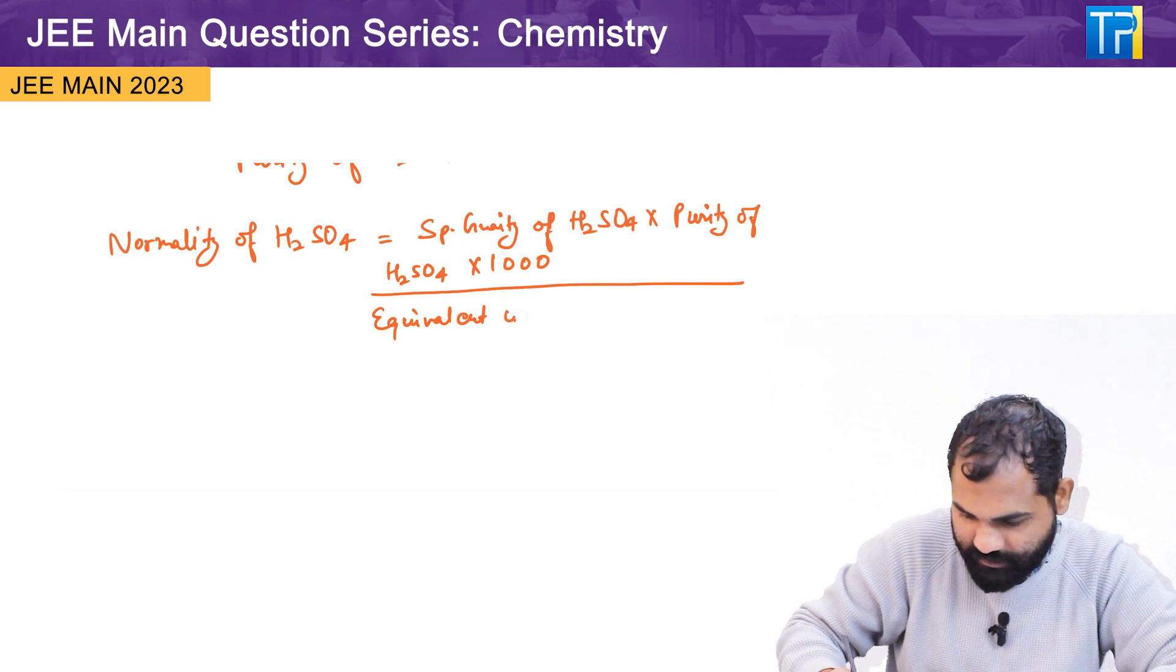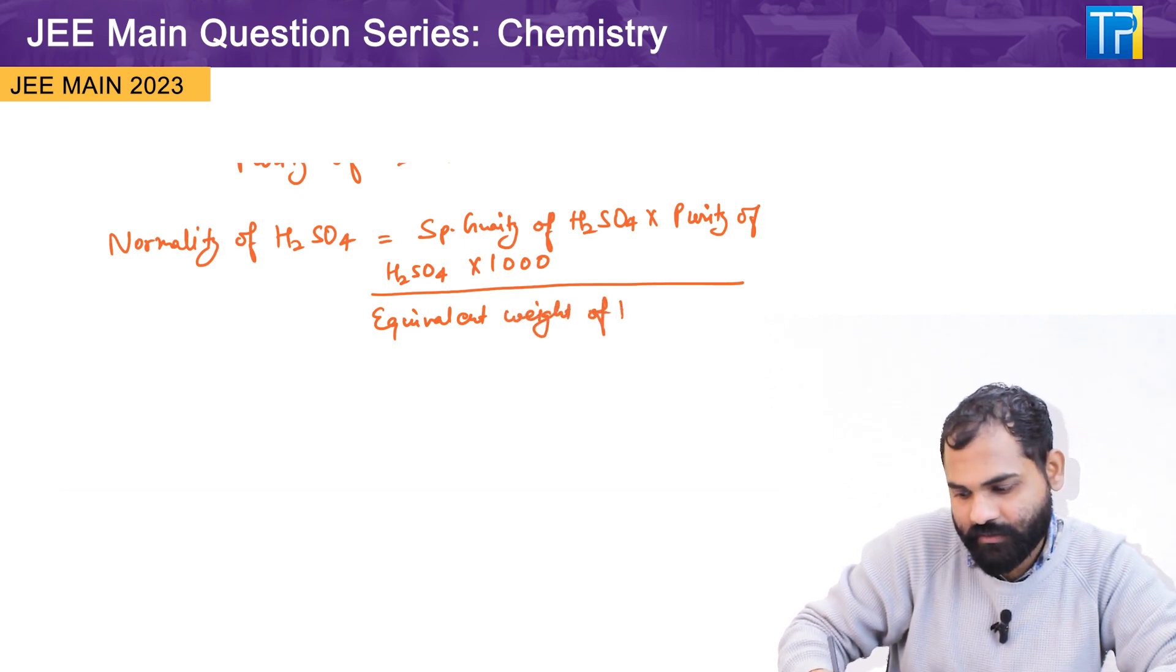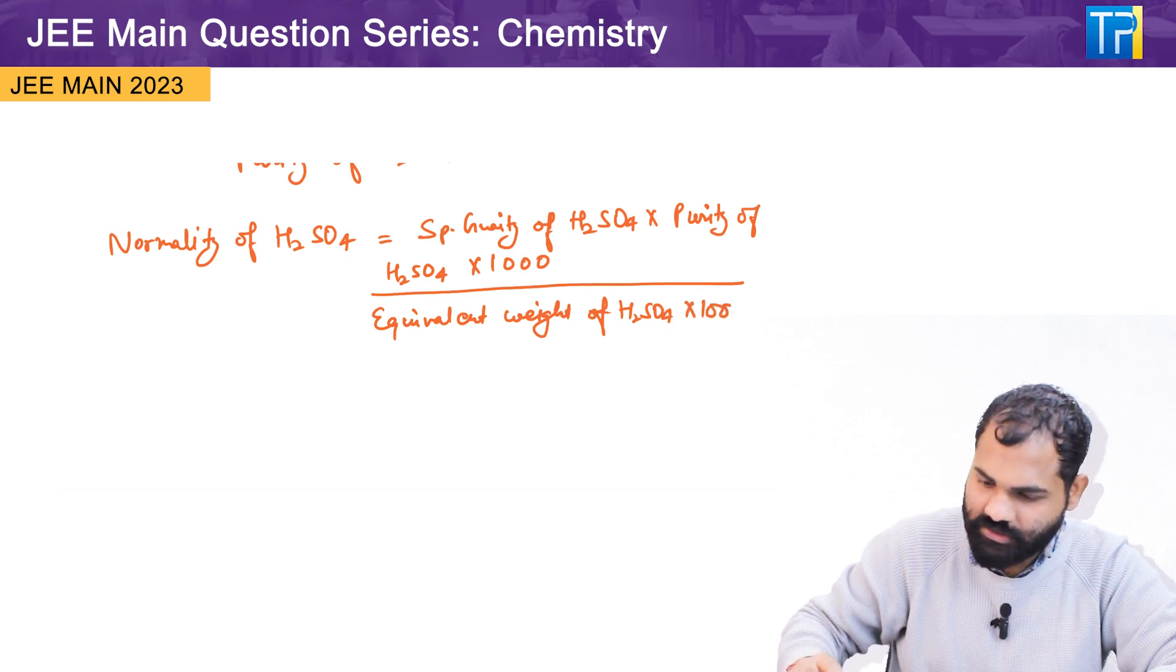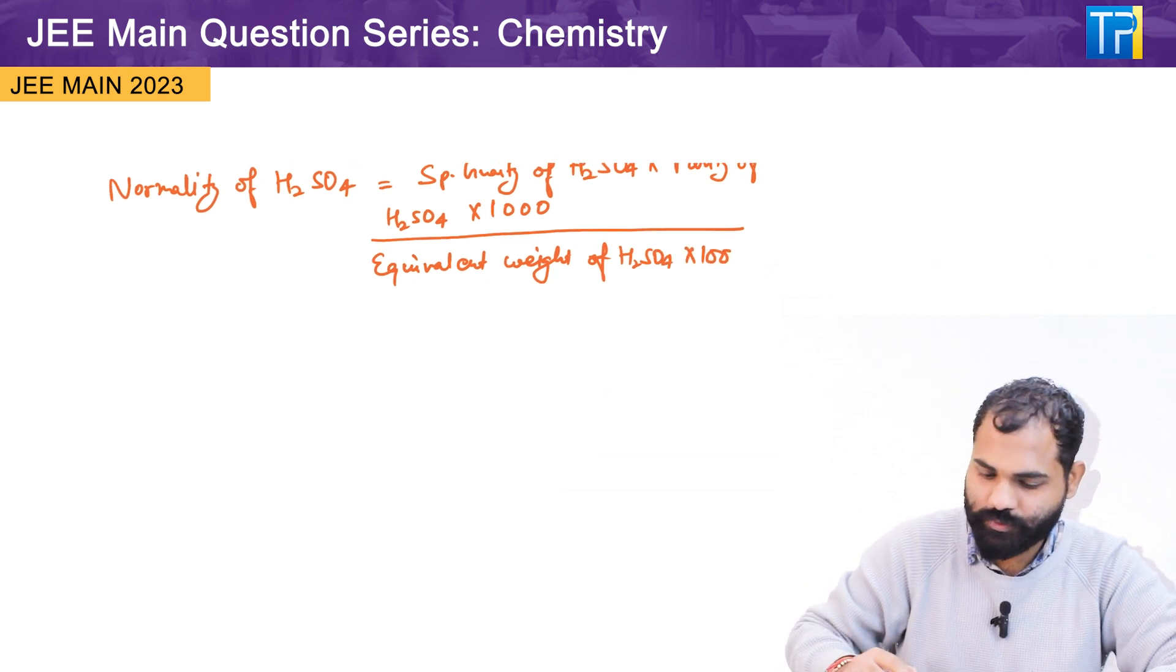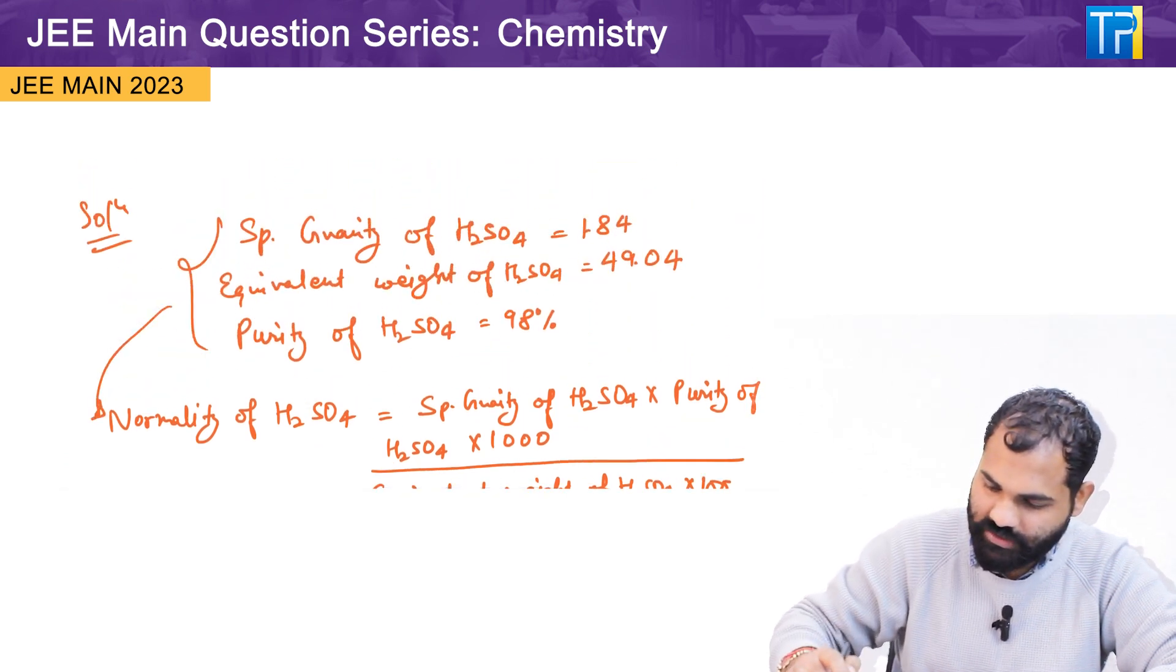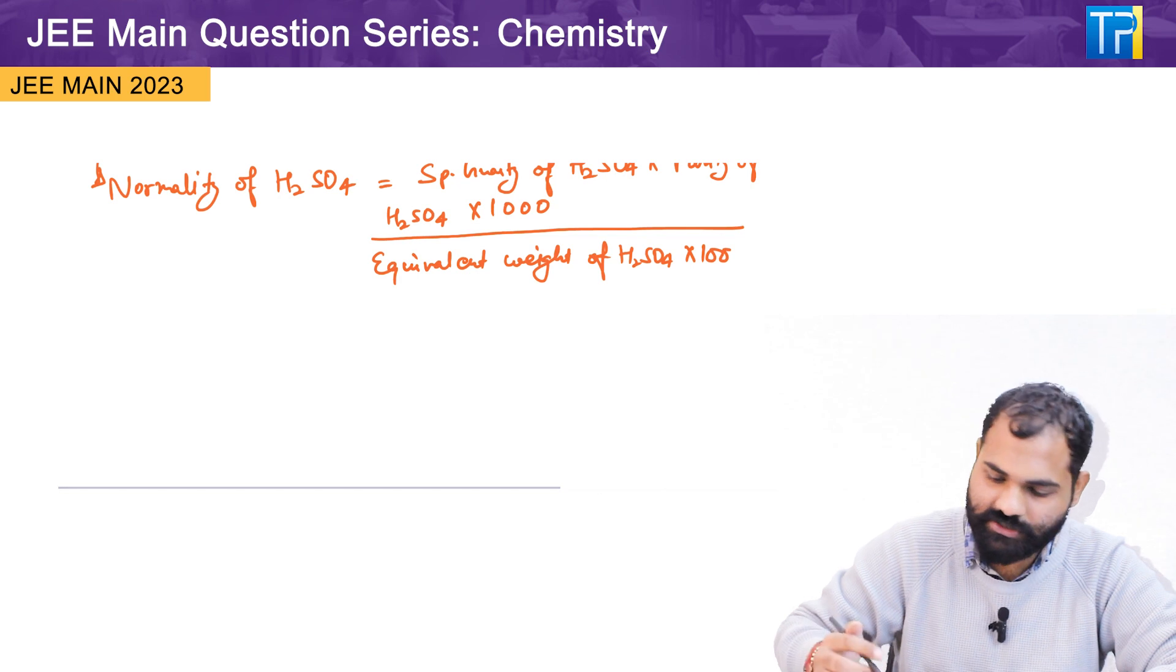The equivalent weight of the chemical compound, here we have H2SO4, into 100. So without any further delay, let's put all these values here in this formula and find the normality of concentrated H2SO4.